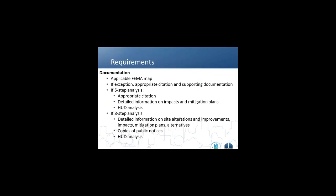For basic documentation requirements: if you don't have an exception, you need a FEMA map showing you are outside the floodplain. If the map shows you are in a floodplain, you must determine whether a 5-step or 8-step analysis applies. A good rule of thumb is to check the exceptions first. If you have an exception for minor rehab but are still in a floodplain, the 8-step does not apply, but flood insurance still may.